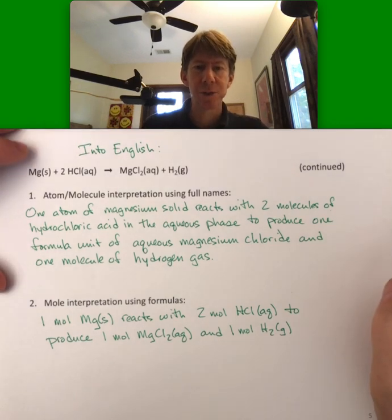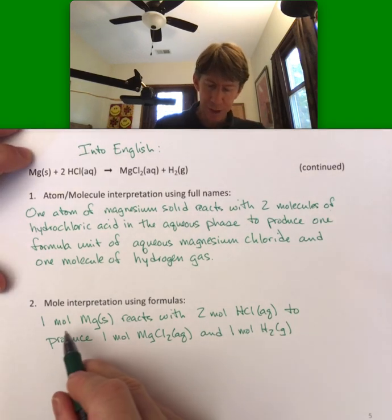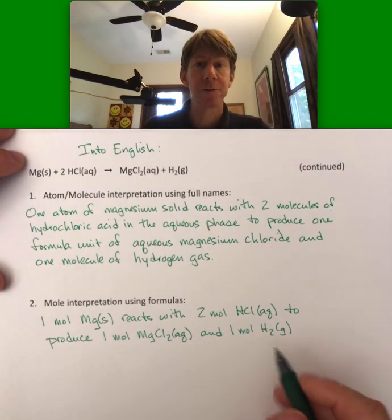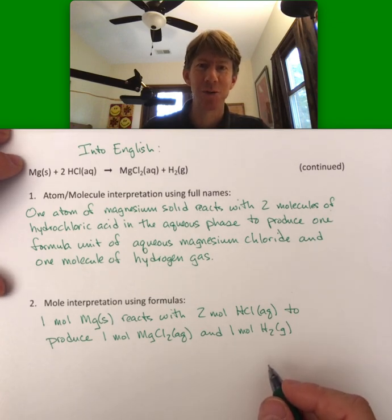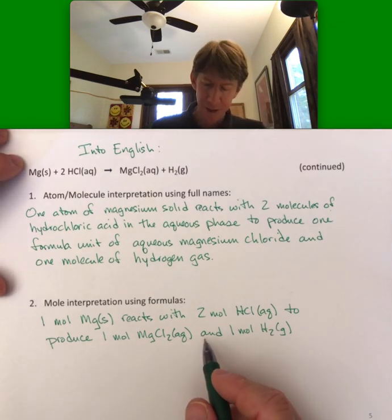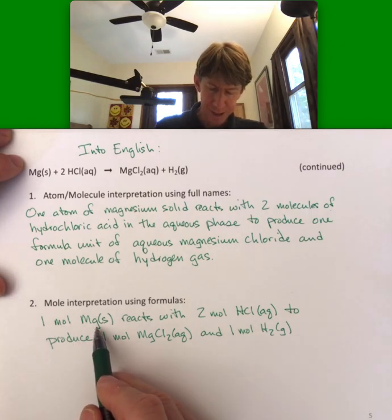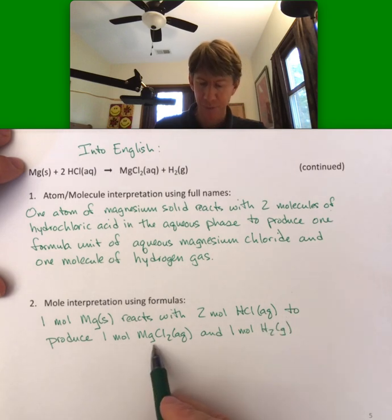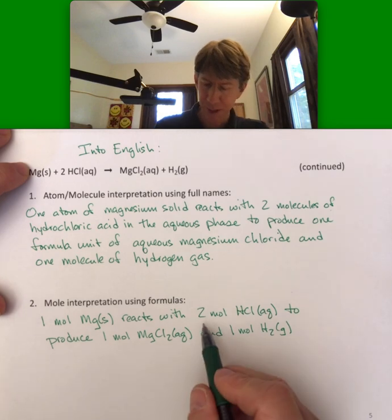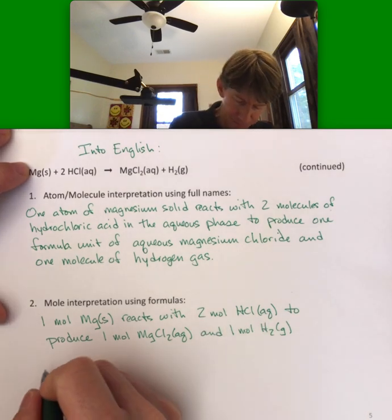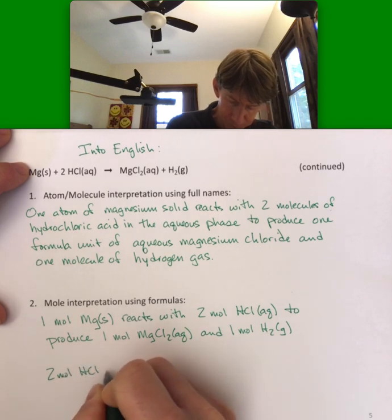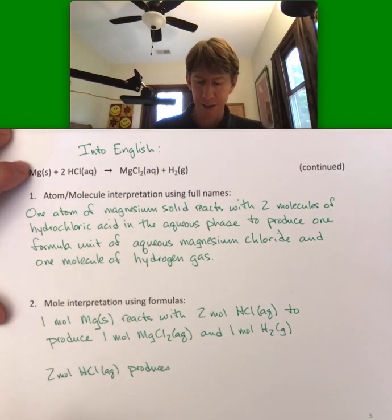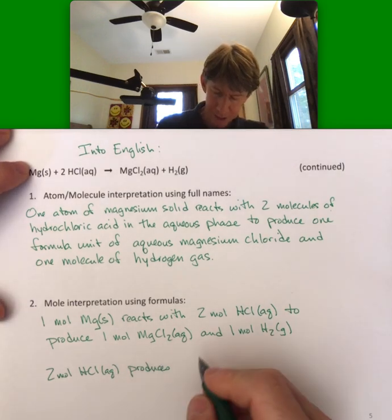And we won't go too much into it now, but we will be using, when I talk about it being a chemical equation, we will be creating what are conversion factors, our old favorite, out of this statement. And you might imagine that one mole of magnesium produces one mole of magnesium chloride. Now let's do this one. Two moles of HCl aqueous produces one mole of magnesium chloride.